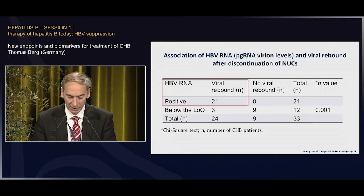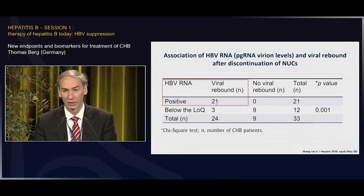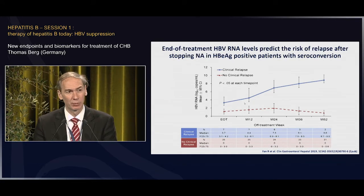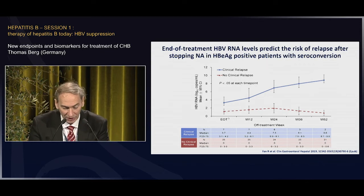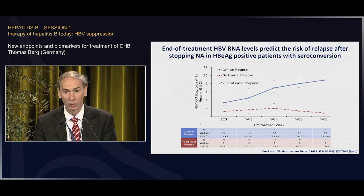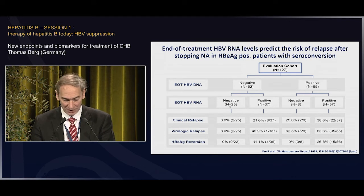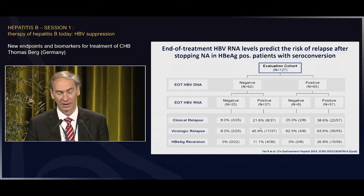This was shown in a Chinese study where, after stopping treatment, of 24 patients with viral rebound, 21 had detectable HBV RNA. In contrast, all patients without any viral rebound were HBV RNA negative at end of treatment. In a study in HBeAg-positive patients achieving HBeAg seroconversion, those with relapse and even HBeAg reversion — it was shown that HBV RNA at end of treatment and during follow-up helped predict that there would be no clinical relapse. Using an algorithm: if at end of treatment you are HBV DNA negative and HBV RNA negative, the likelihood of HBeAg reversion is zero, compared to 11% if you are RNA positive. The risk of clinical and virologic relapse is also much lower for those stopping treatment after seroconversion in an HBV RNA-negative state.